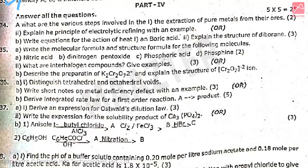Part four: five mark section — if you have a question, you have an A or B choice. Total 25 marks. Question 34A: what are the various steps involved in the extraction of poor metals from their ores? Question 34B (option): explain the principle of electrolytic refining with an example. Option B: write the equations for the action of heat on boric acid and explain the structure of diborane. Question 35A: write the molecular formula and structural formula for the following molecules.